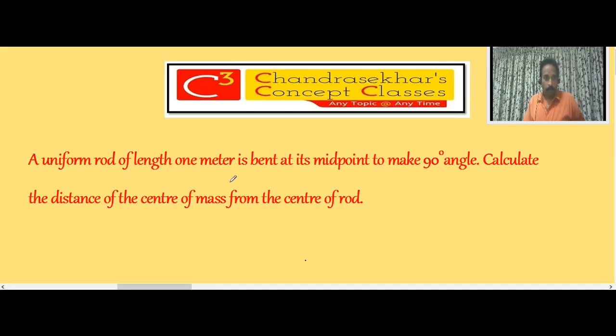A uniform rod of length 1 meter is bent at its midpoint to make a 90 degree angle. Calculate the distance of the center of mass from the center of the rod. Here, a uniform metal rod is taken, 1 meter long, and is bent at the midpoint so that the angle between the two sides is 90 degrees.